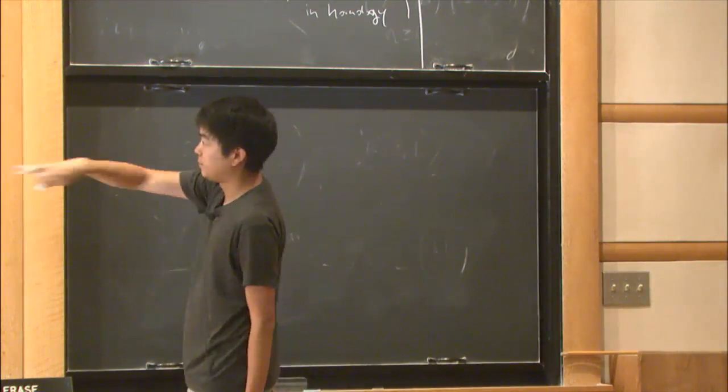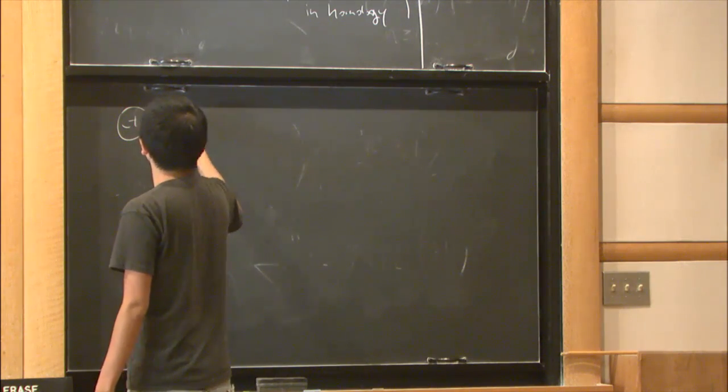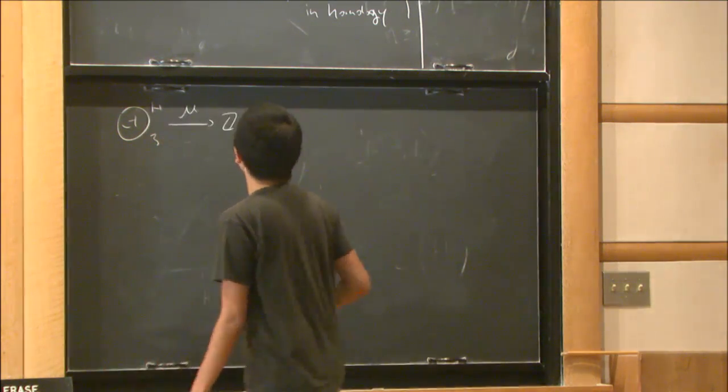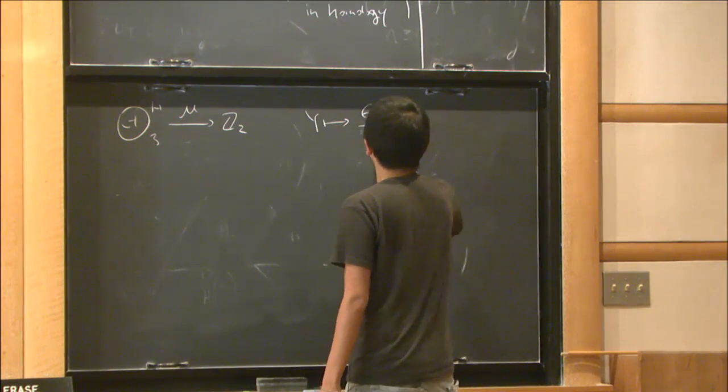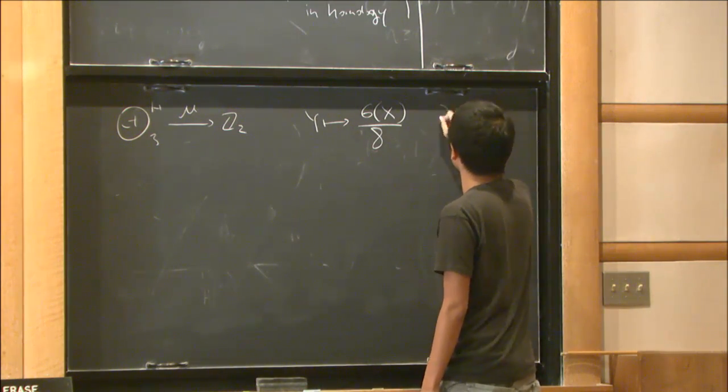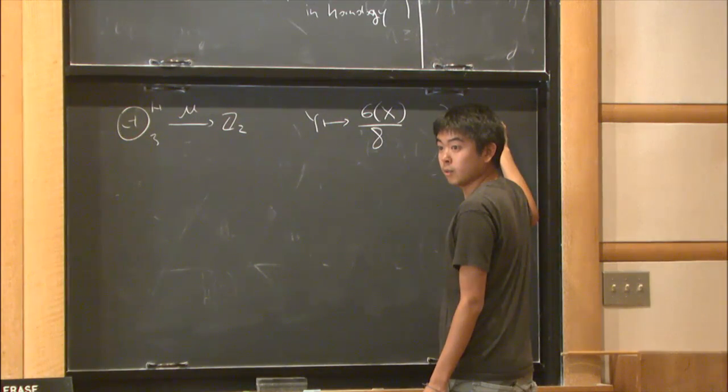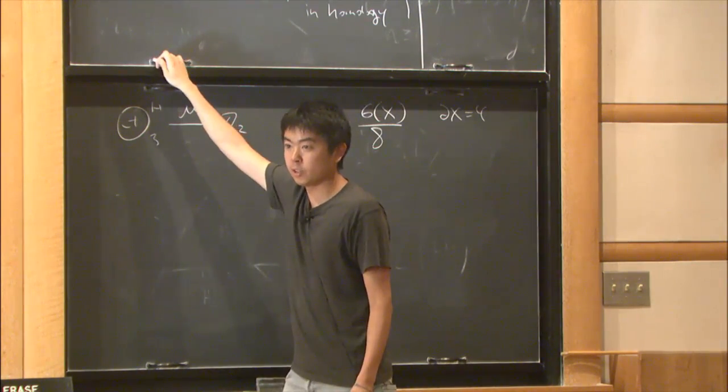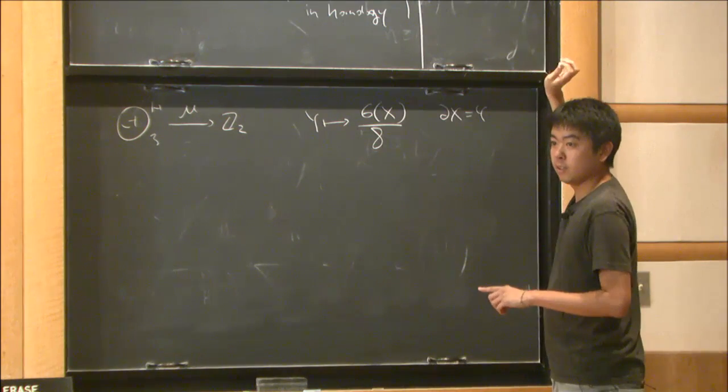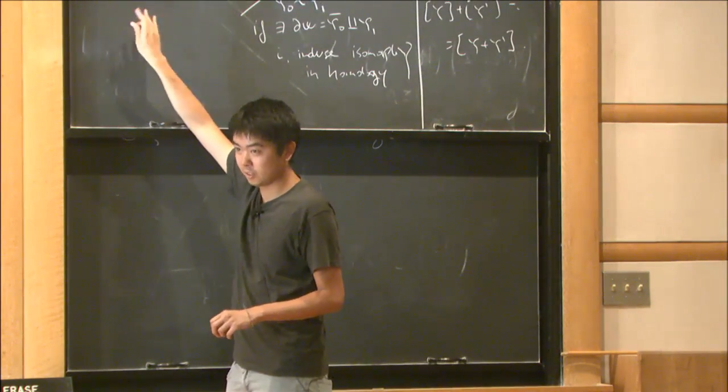Now one can extend this whole description to define a homomorphism from θ_H³, called the Rokhlin homomorphism, to Z/2. To a Y you send the signature of X over 8, where X is any 4-manifold with boundary Y. The Kervaire theorem says that this group is zero after you take connected sums with homology spheres.